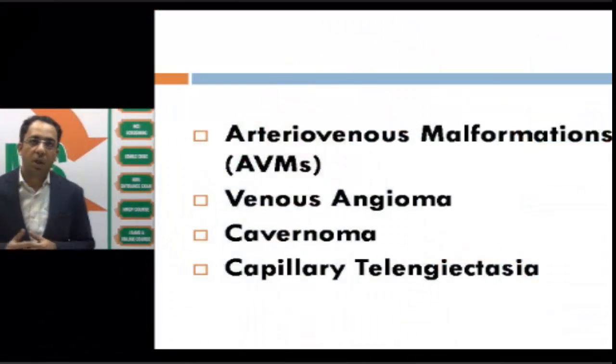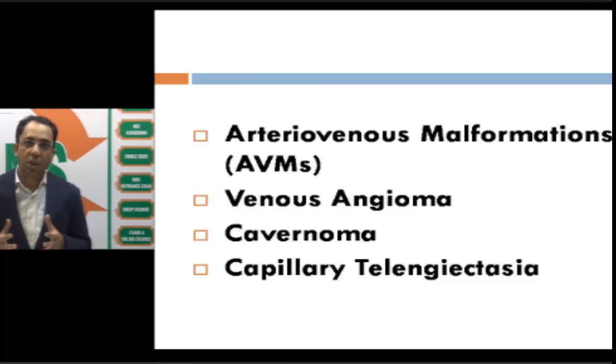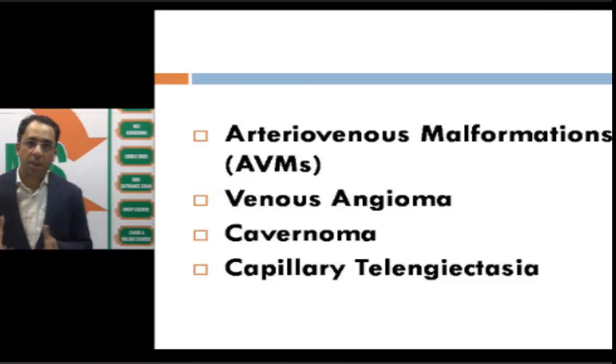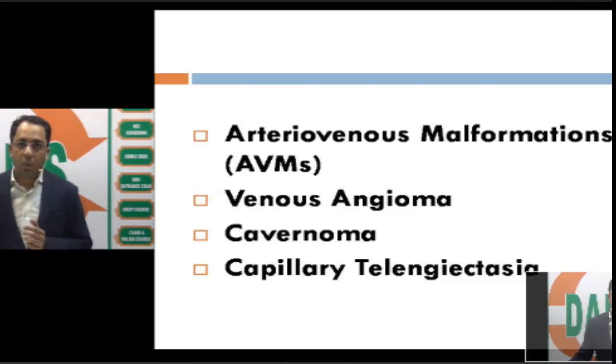Today we'll talk about non-neoplastic vascular malformations of the brain and highlight the radiological findings where you would think of a vascular malformation and what is the importance of it. Broadly speaking, you can divide the vascular malformations of the brain into arteriovenous malformation, venous angioma, cavernoma, or capillary telangiectasia.